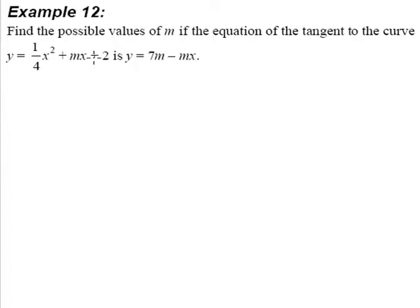For example 12, we're supposed to find the values of m. If the equation of the tangent to the curve y equals 1 quarter x squared plus mx plus 2 is y equals 7m minus mx. Phew, what a mouthful. But what does this really mean?